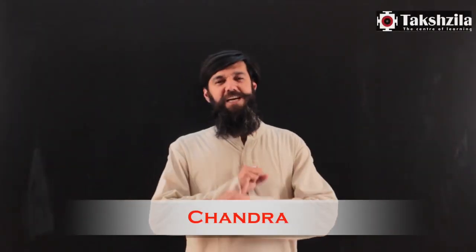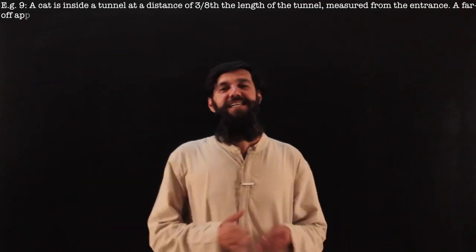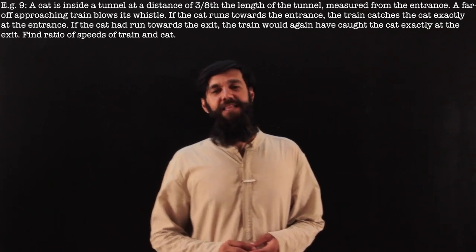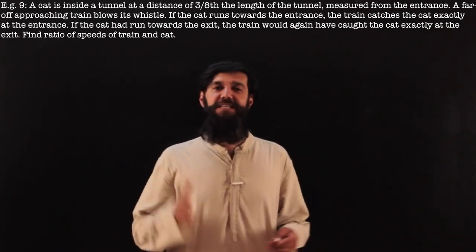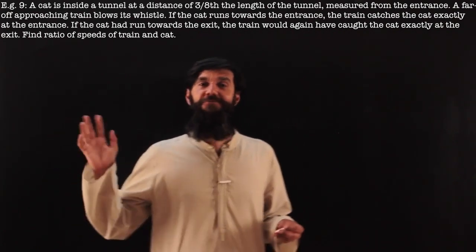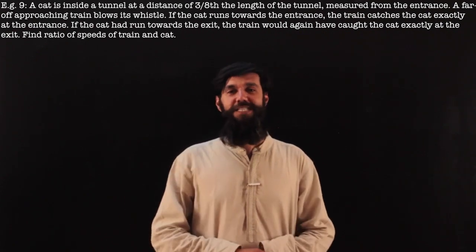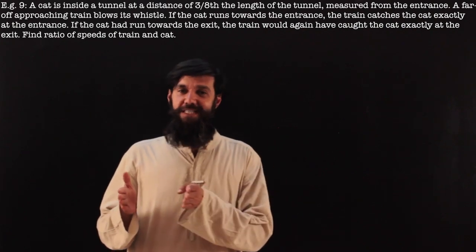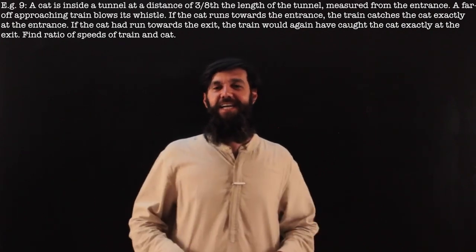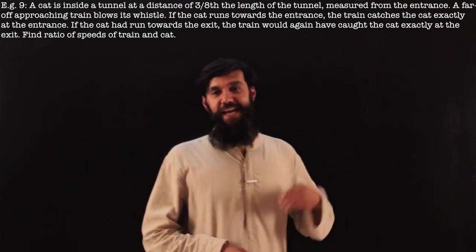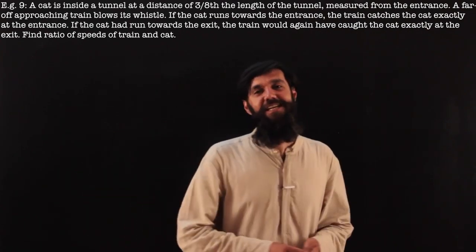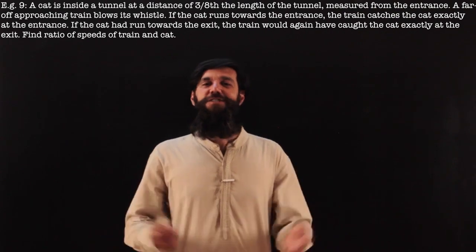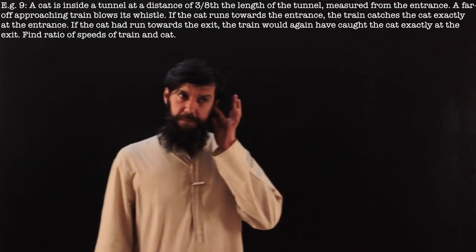The next question wins the prize hands-down for its difficulty level and also for the innovative use of proportionality. It is an actual cat question. The example reads: a cat is inside a railway tunnel at a distance of 3/8 of the tunnel's length measured from its entrance. A train approaching the entrance blows its whistle. If the cat runs towards the entrance, the train catches the cat exactly at the entrance. If the cat runs towards the exit, the train again catches the cat at the exit. What is the ratio of speeds of the train and that of the cat?